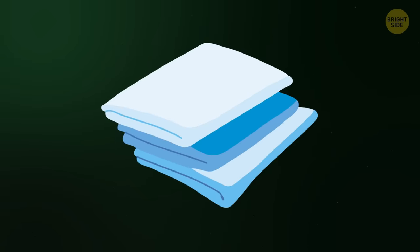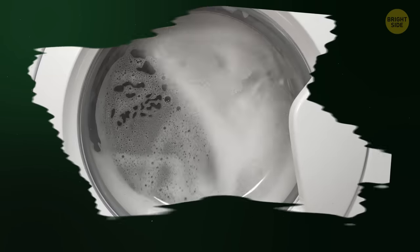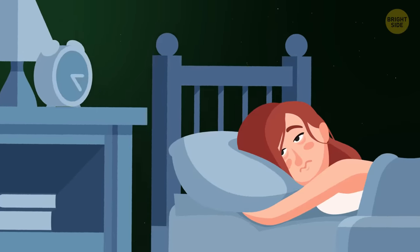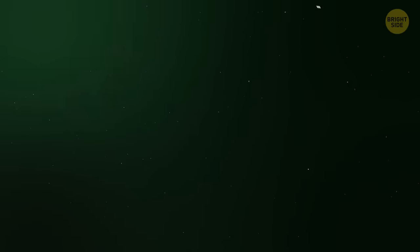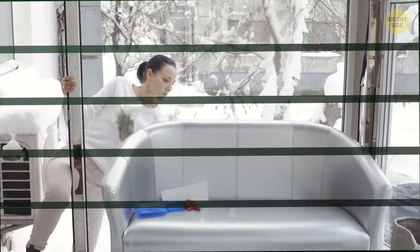Number 8: Sheets. When sheets are washed too many times, they become, shall we say, translucent. Plus, it's really uncomfortable to sleep on them. The only reason to keep them around is if you plan to turn them into cleaning cloths.